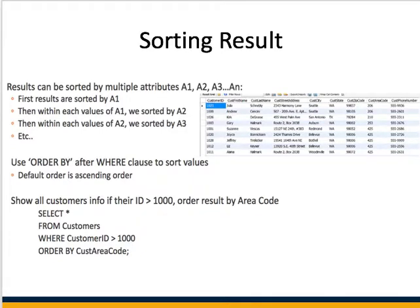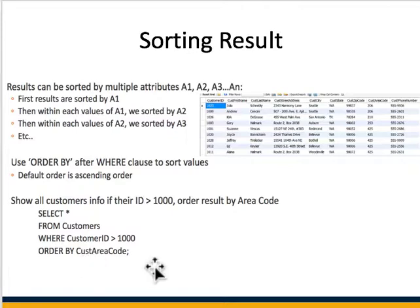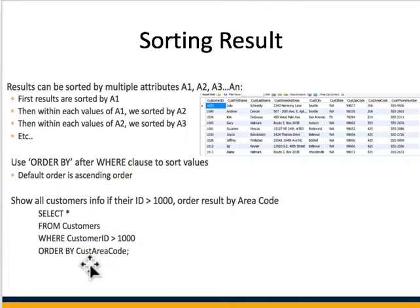For that, there is a clause called ORDER BY, which is usually written after the WHERE condition. You say: once you get the results, order them by some attribute or group of attributes. So ORDER BY is the keyword, followed by the attribute you want to order the results by.